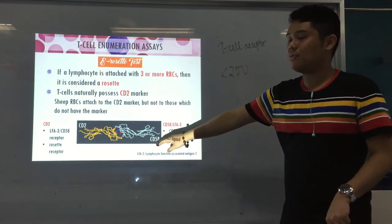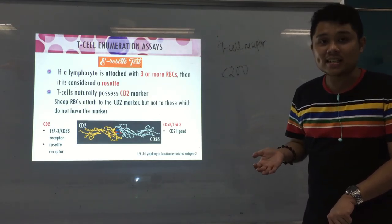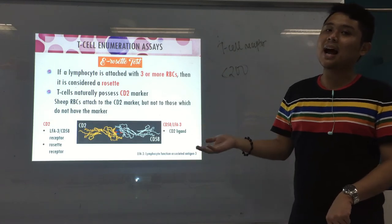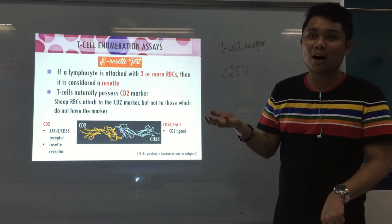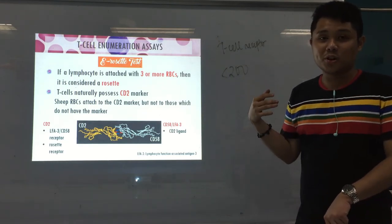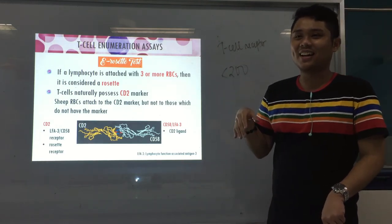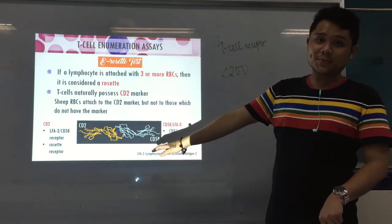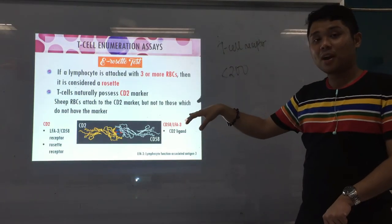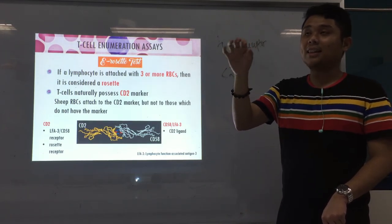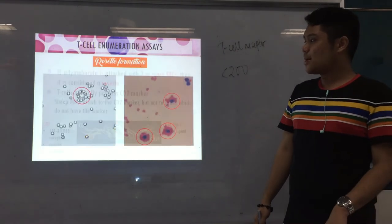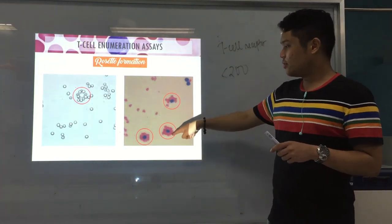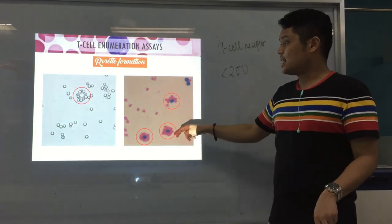The attraction of sheep RBCs toward CD2 of your T-cells is due to CD58/LFA3. That is why they form a rosette — the RBCs surround the T-cell like a flower. CD58 is also found on macrophages and antigen-presenting cells in our body, but those cells were removed during centrifugation with the granulocytes. Once you see a rosette, it is confirmed that the cell is a T-cell. This test is for enumerating, not for determining T-cell function.